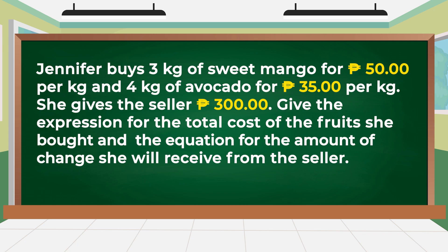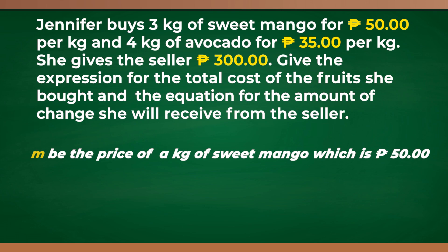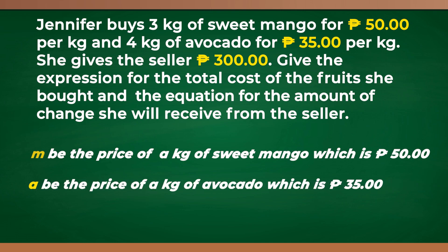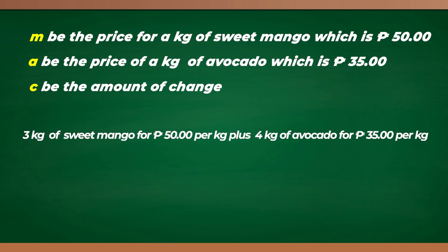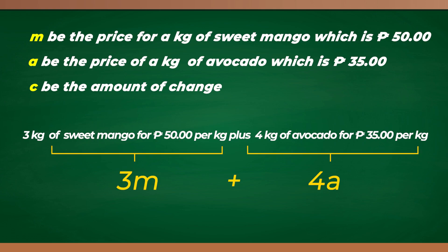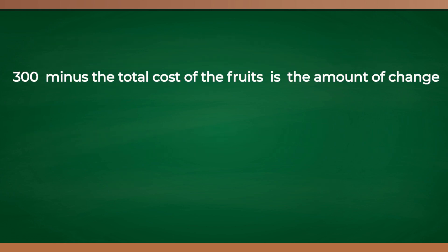Now, let us use variables to represent the price for each fruit. Let M be the price of a kilogram of sweet mango, which is 50 pesos. A be the price of a kilogram of avocado, which is 35 pesos. C be the amount of change. From that process and by using variables, we can now form our expression which is 3M plus 4A. 300 minus the total cost of the fruits is the amount of change. From that process, we can form our algebraic equation which is 300 minus the quantity of 3M plus 4A equals C.